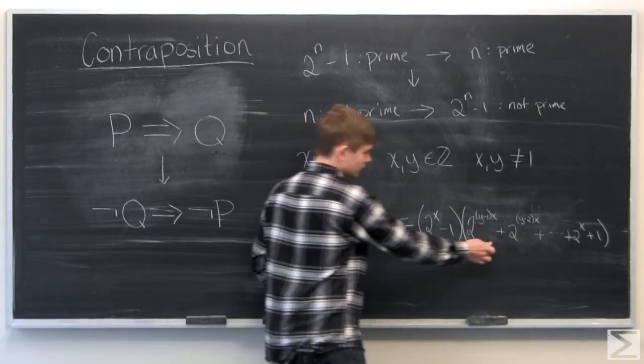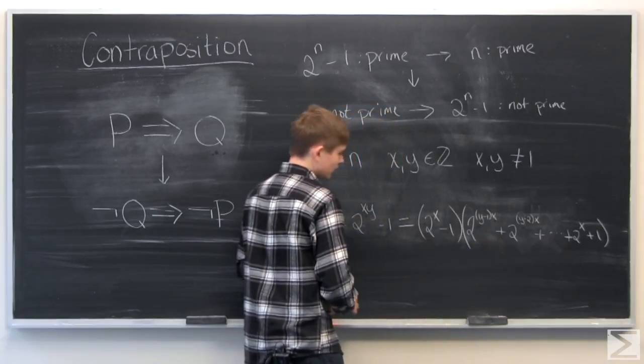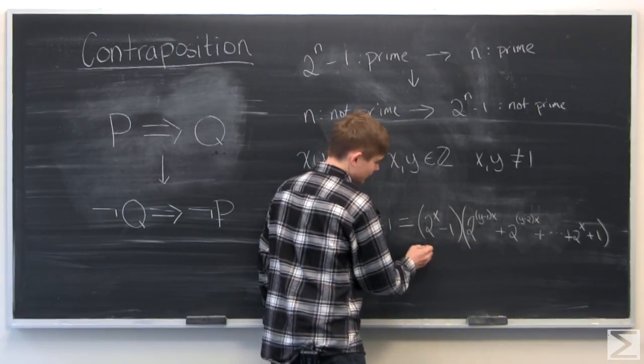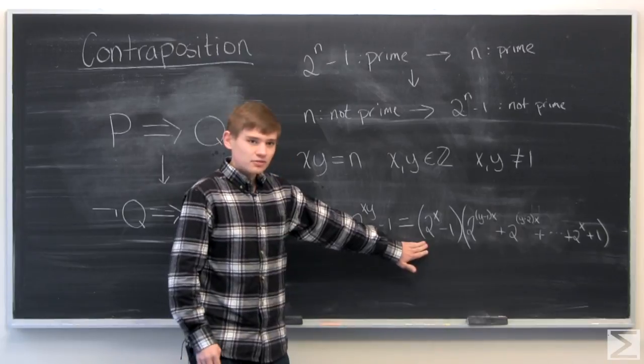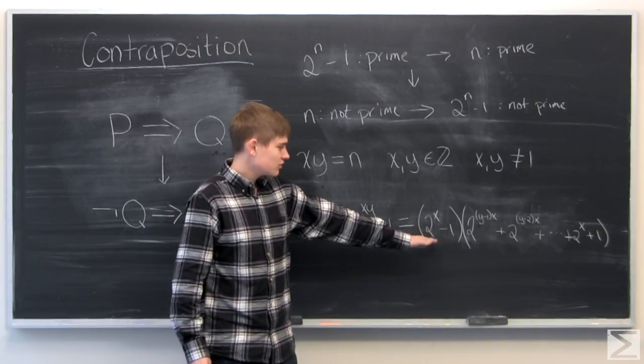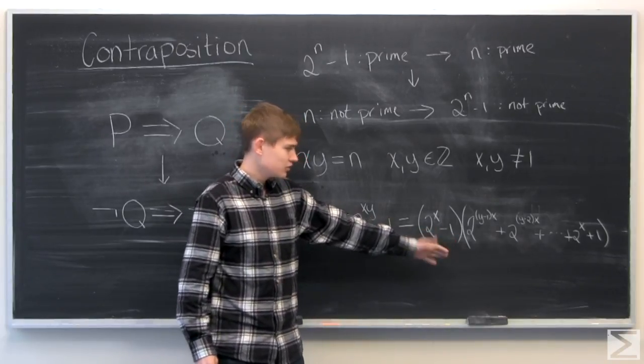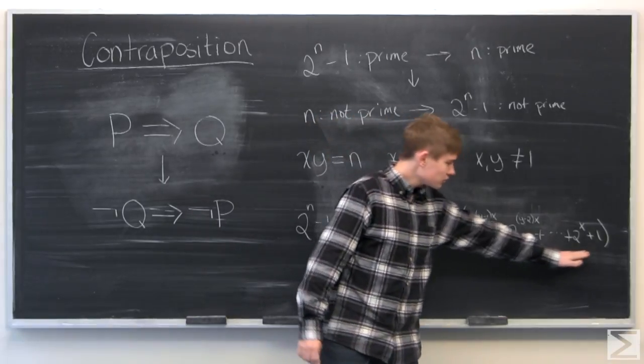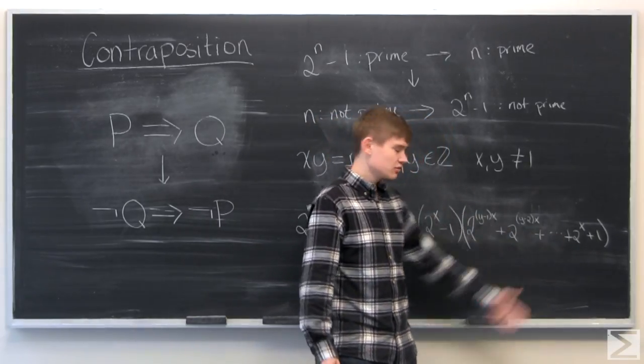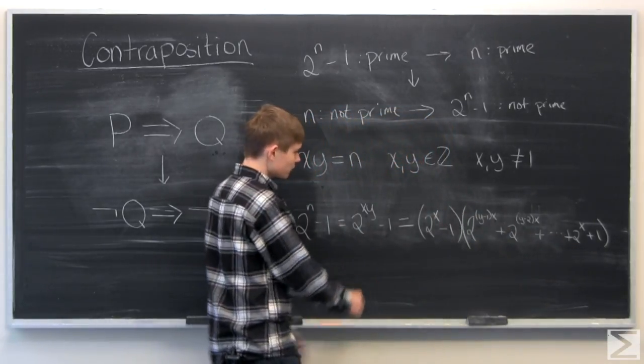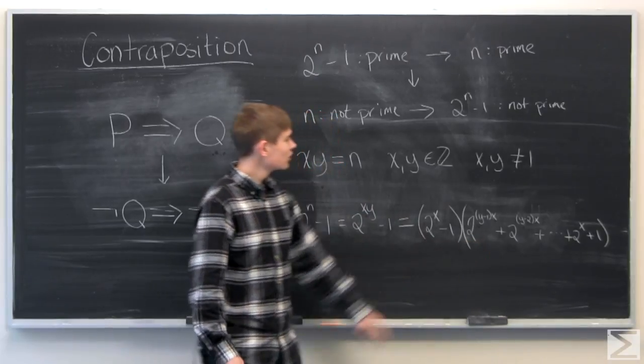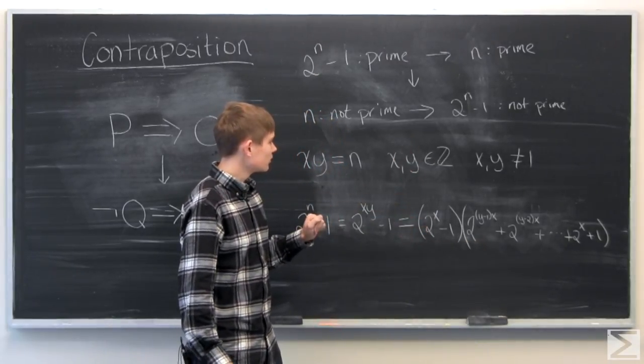So now that we have these two terms, it suffices to say that this will obviously be an integer, since 2 to the x is an integer and you're just subtracting 1. And all these will be integers, and the product of integers is integers.